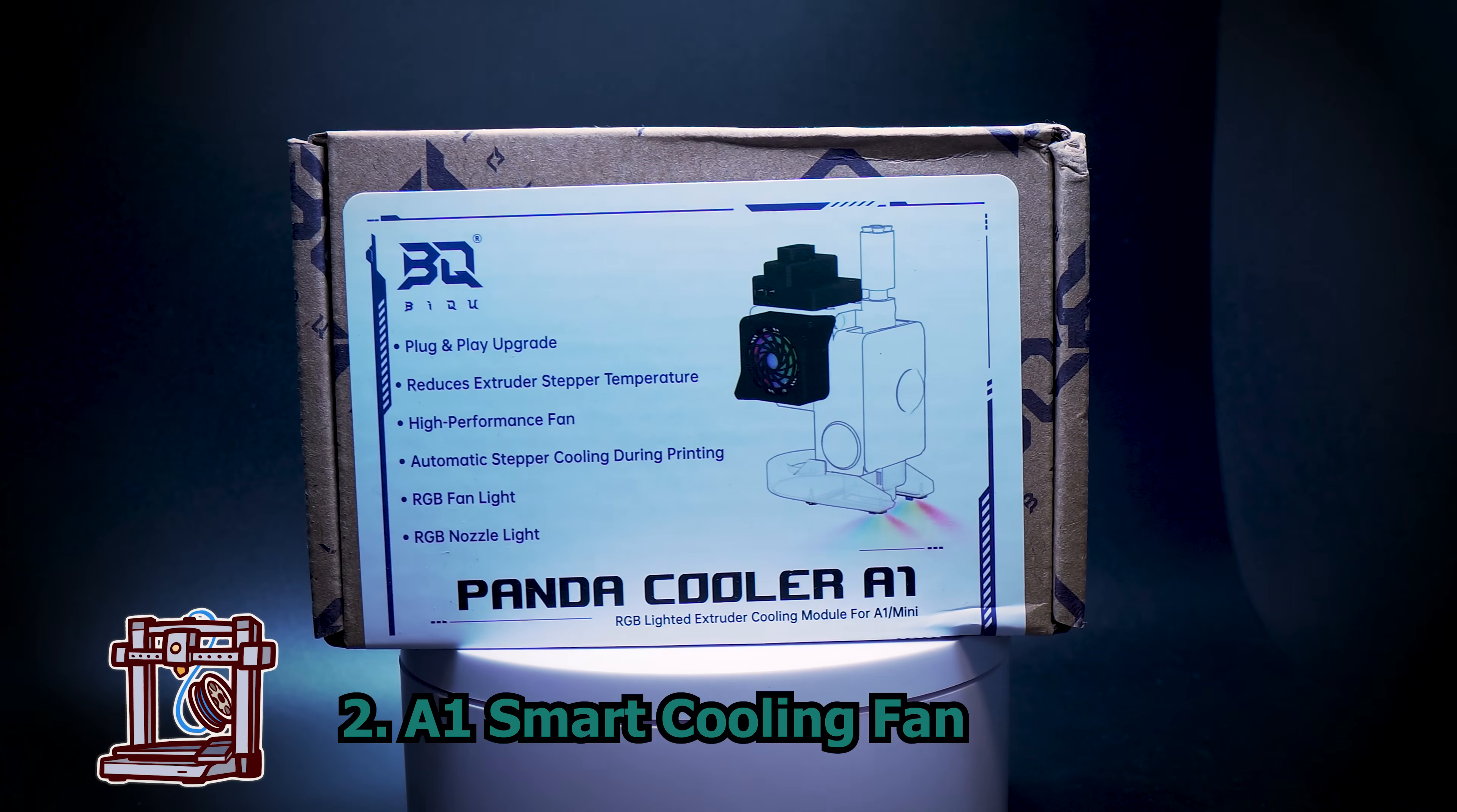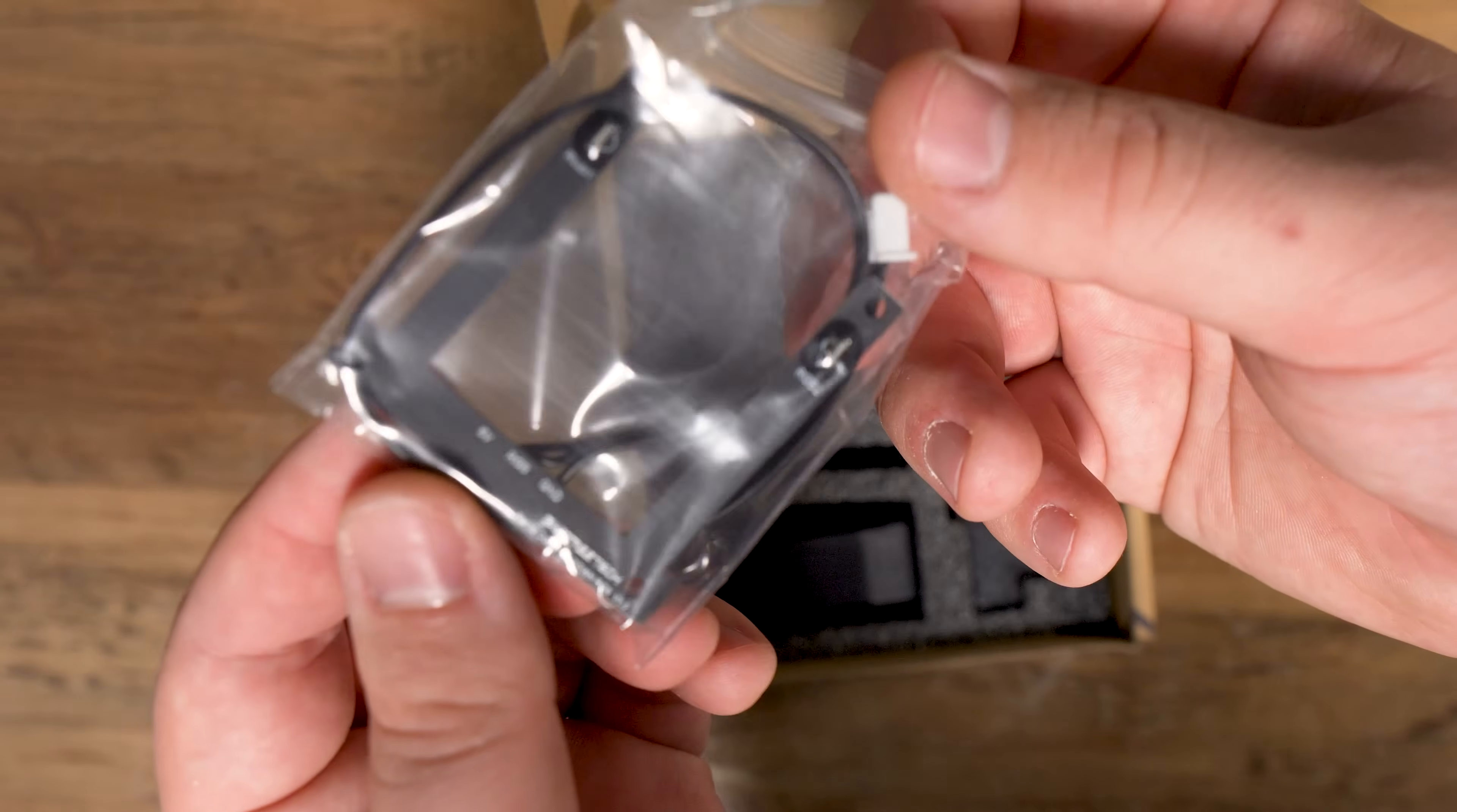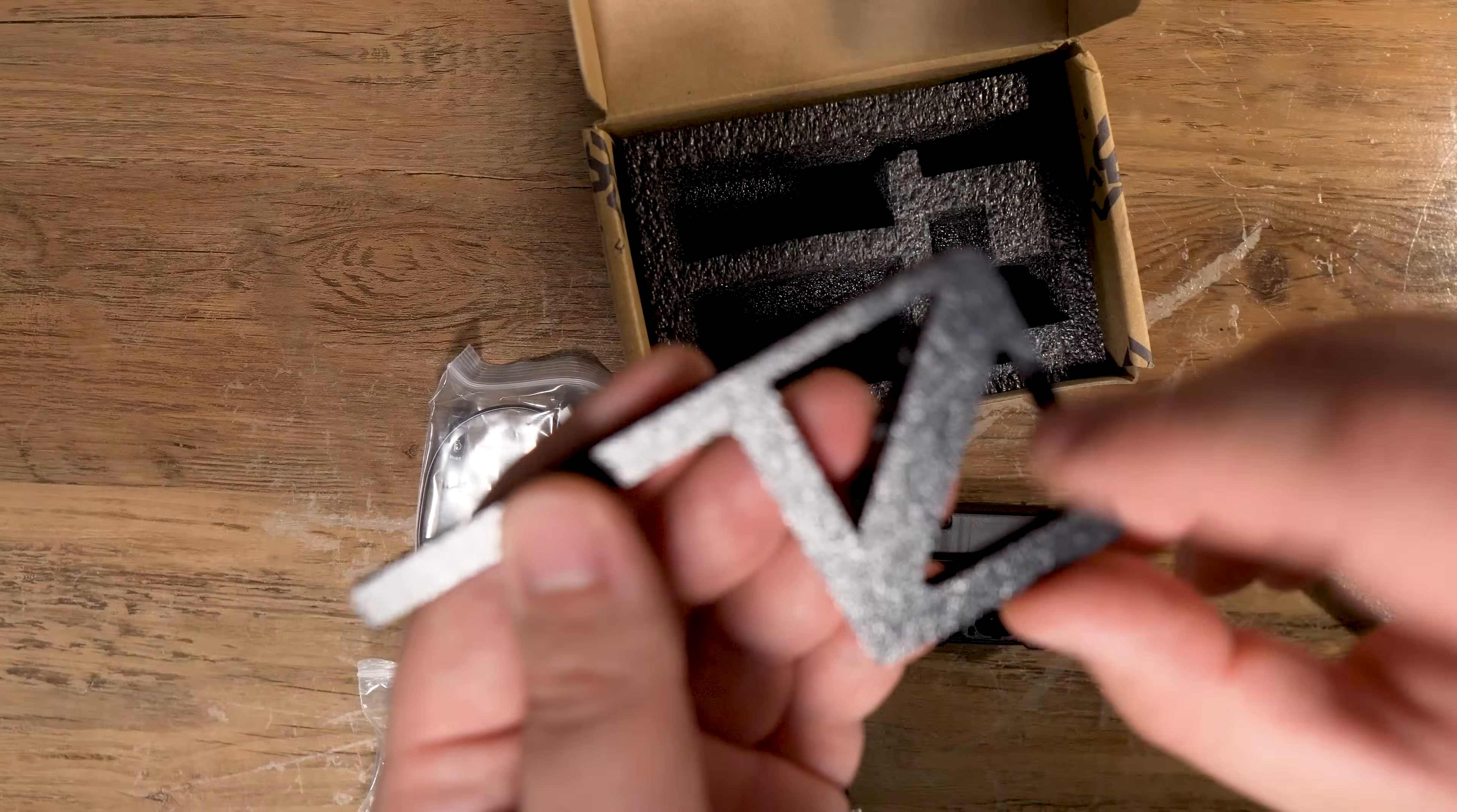At number 2, we have a cooling fan for your A1 and A1 Mini. As the name suggests, its job is to cool your extruder motor. It also comes with RGB lighting that will act as an indicator for how far your print has progressed, among other notices.